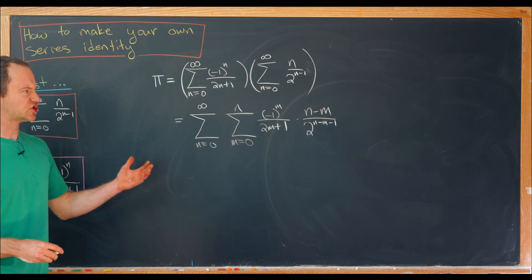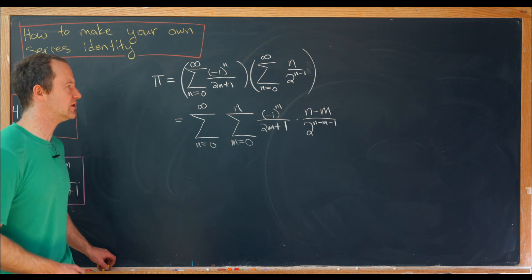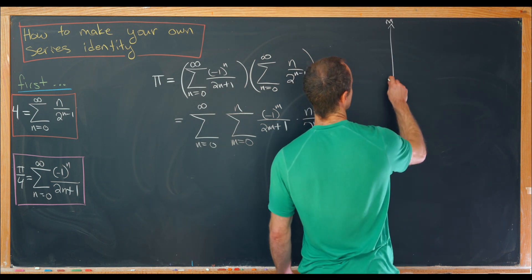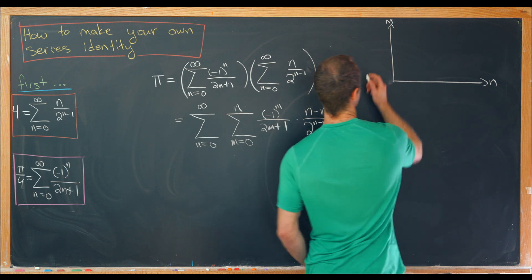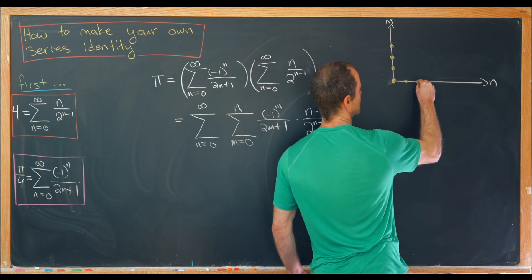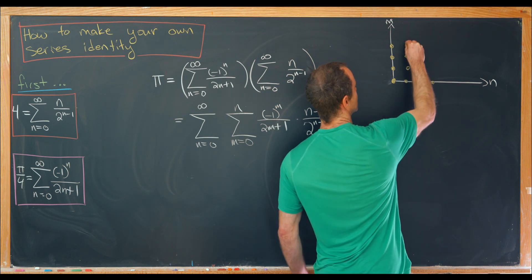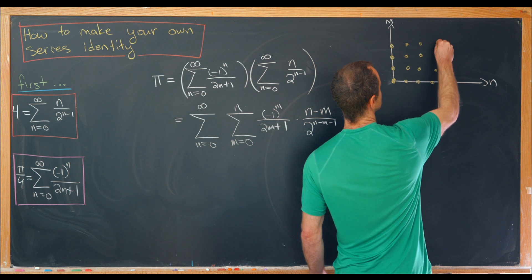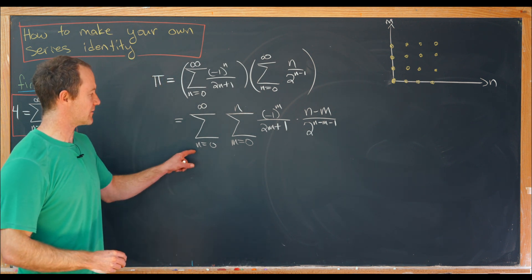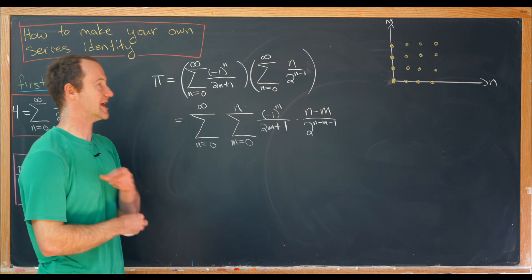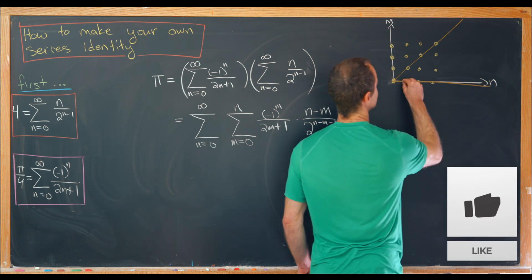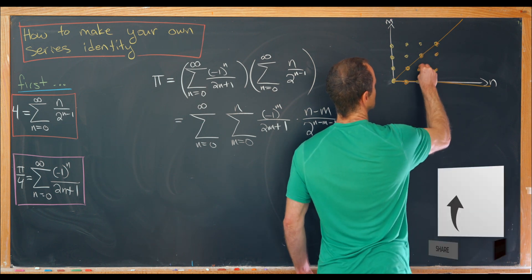Now we're going to change the order of summation. We can think about how to do that by looking at a lattice array, where the m axis is vertical and the n axis is horizontal. We fill in a complete lattice of dots, but we're summing only over the lower triangle — since n goes from 0 to infinity but m only goes from 0 to n. So we're summing over all lattice points in this lower triangle.